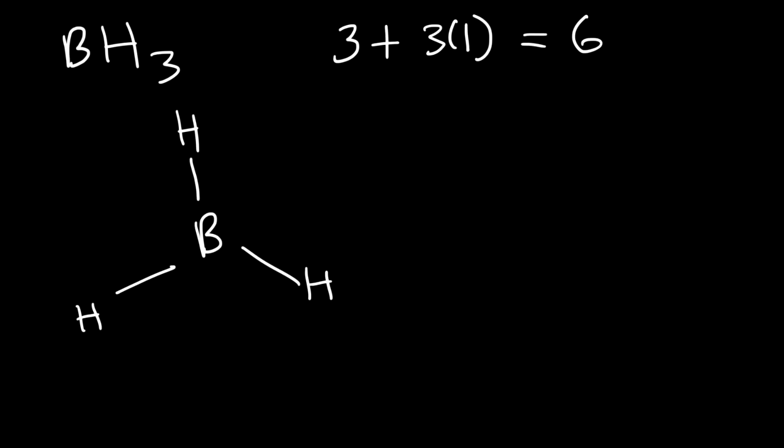BH₃ has a trigonal planar molecular geometry with a bond angle of 120°. Not every molecule will obey the octet rule — it is just a general rule. BH₃ is one example of a substance with an incomplete octet; it has less than eight electrons.